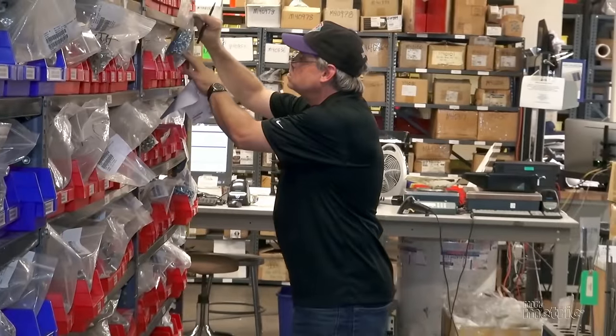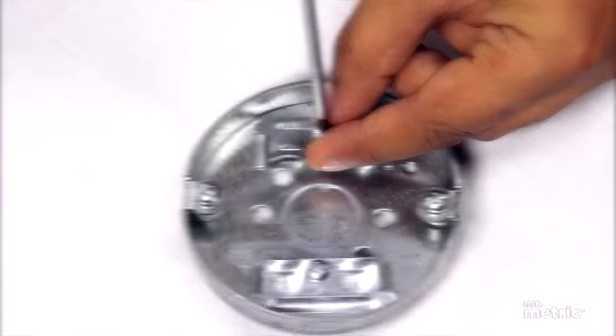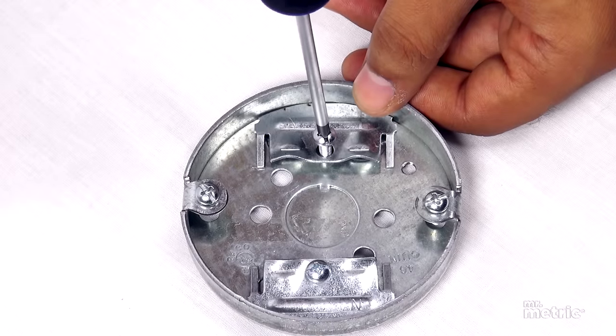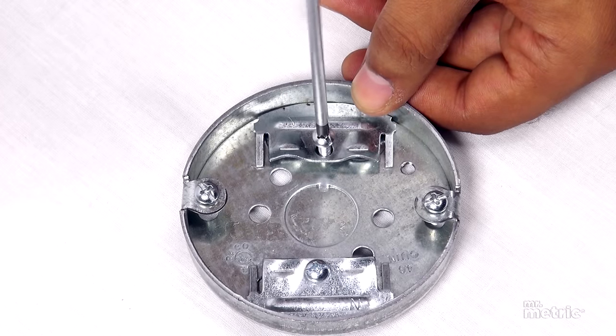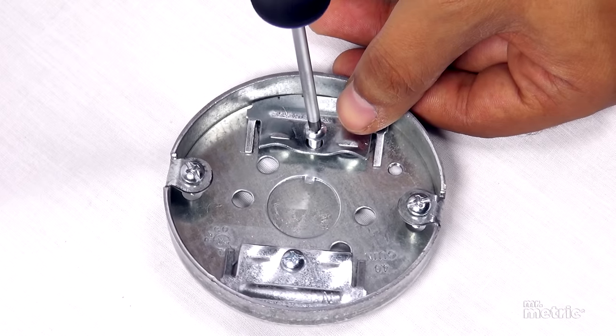The ability to read screw thread call-outs will allow you to quickly find the correct screw sizes. There are other less frequent markings as well. These can affect the fastener's hardness, material, coarseness of threads, and other factors.